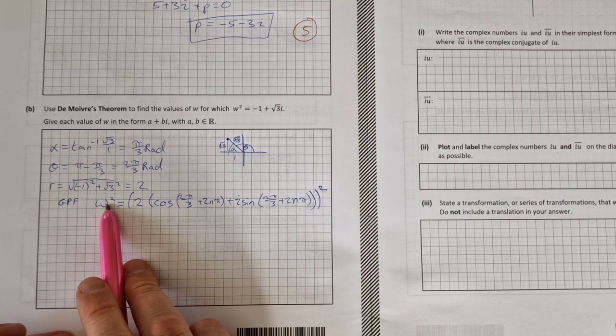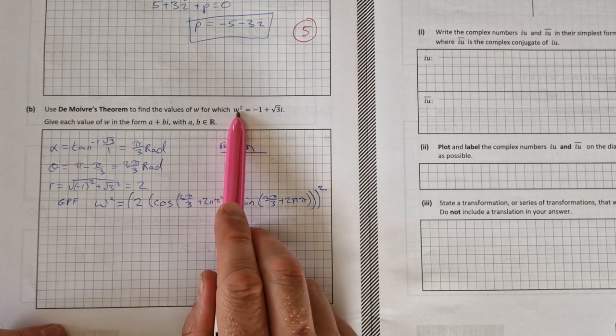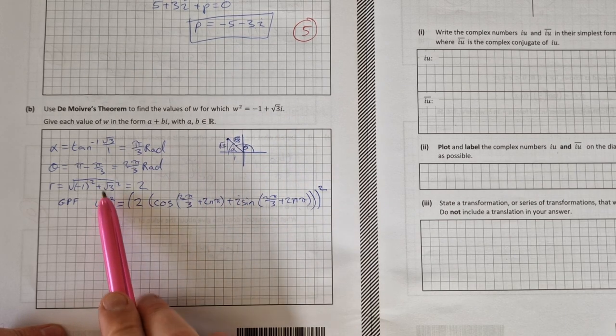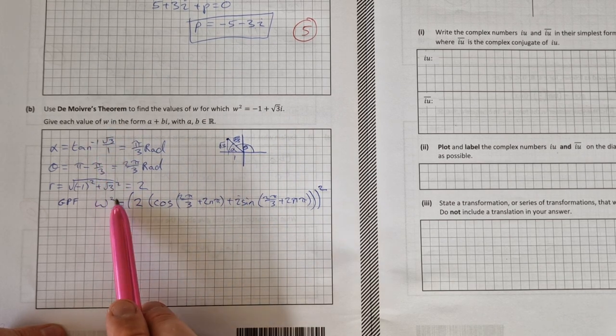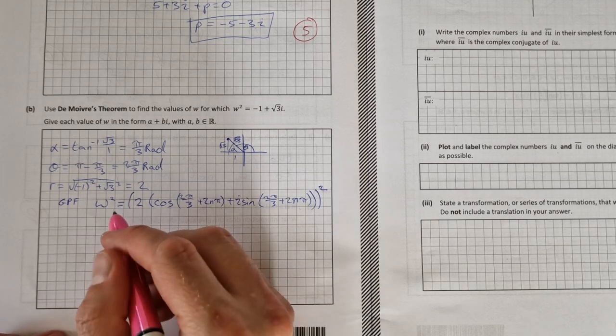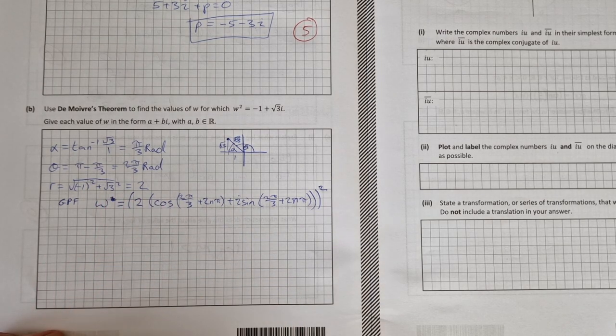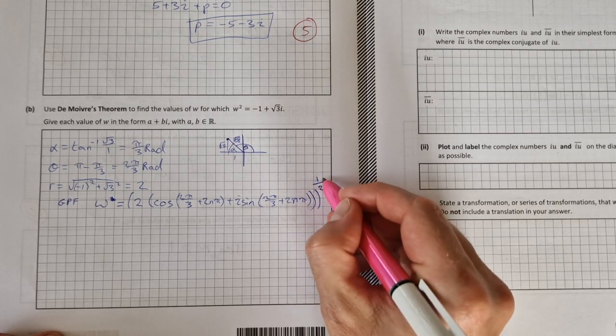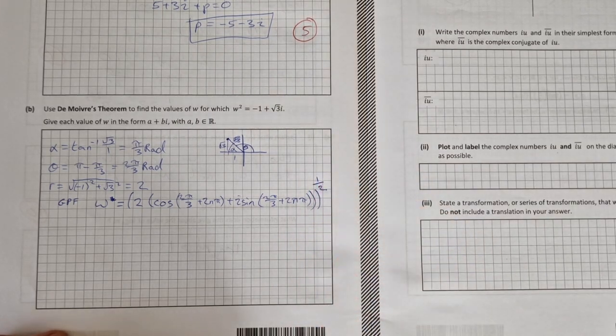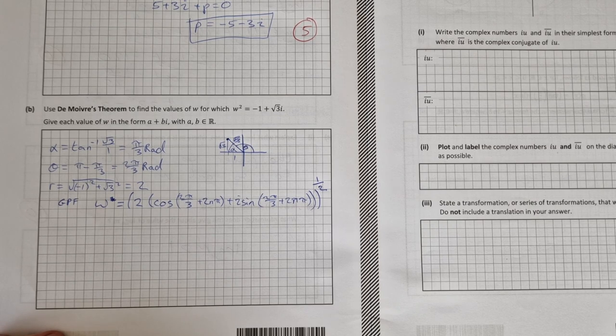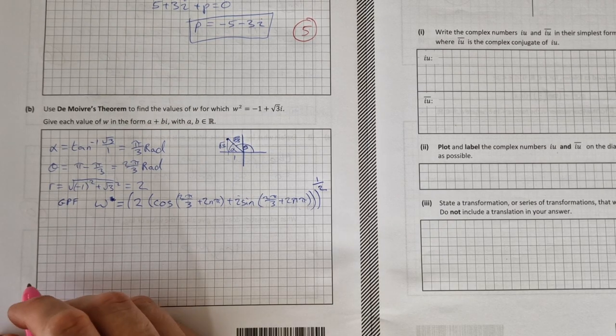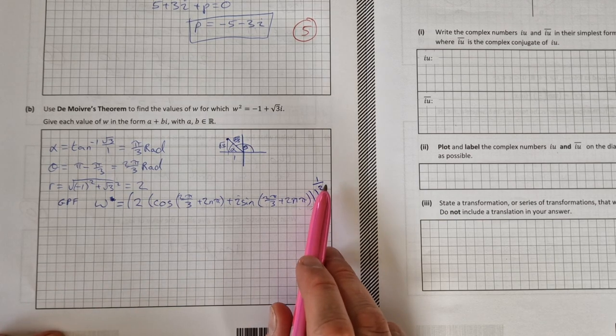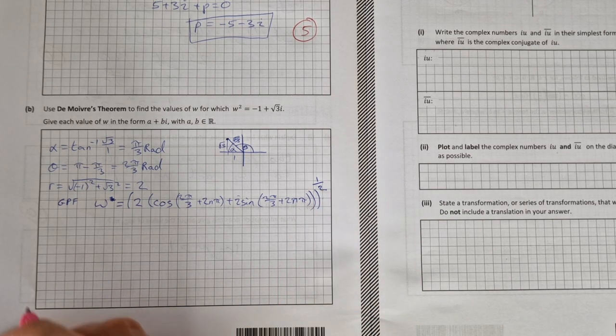Plus i sine (2 pi over 3 plus 2n pi), close the brackets, and that is all to the power of 2. This is omega squared, which is what's given in the question. If I want to find each value for omega, I just want omega, so I'm going to take the square root of both sides. That would get rid of the square there and would give me 1 over 2, the power of a half over here. Now I can apply De Moivre's theorem.